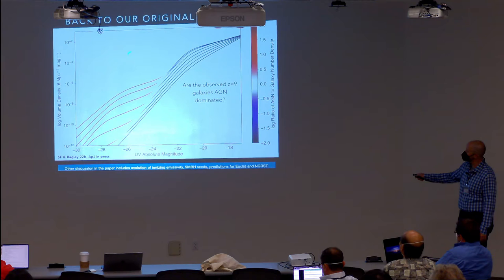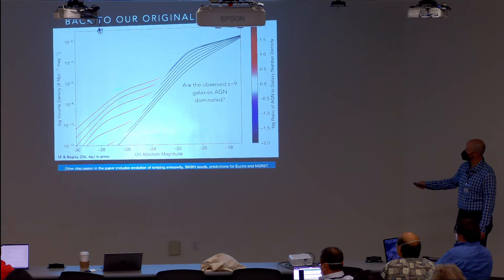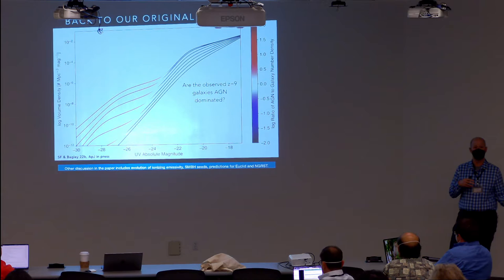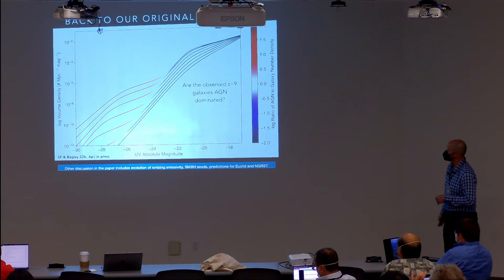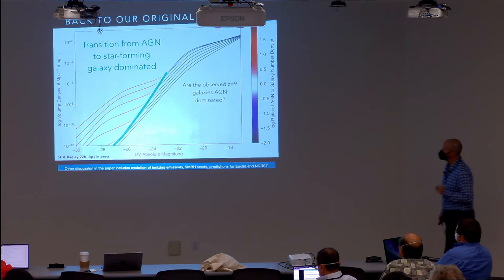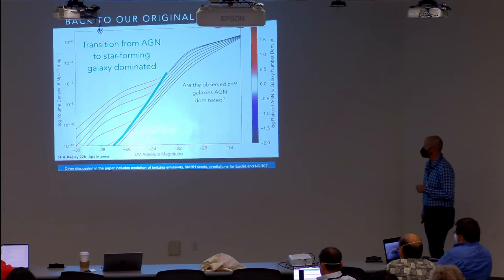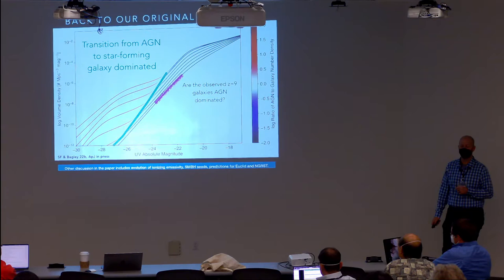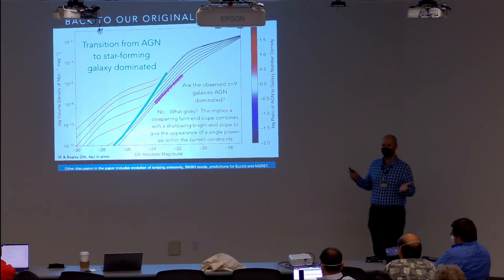Plotting the median luminosity function from redshift 3 to redshift 9, color-coded by the AGN-to-star-forming-galaxy ratio at each magnitude: red means AGN dominated, blue means galaxy dominated. Are the observed redshift-9 galaxies AGN dominated? Based on these fits, where we observe the redshift-9 galaxy luminosity function falls in the galaxy-dominated regime — so the answer appears to be no.